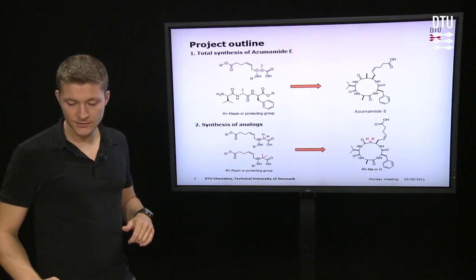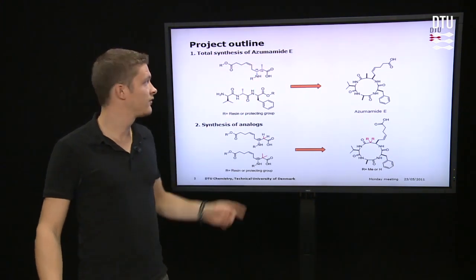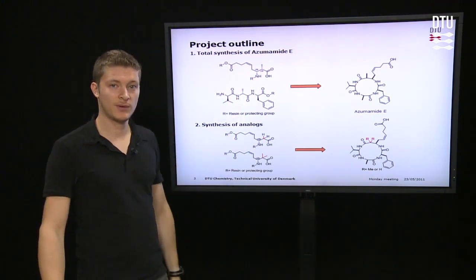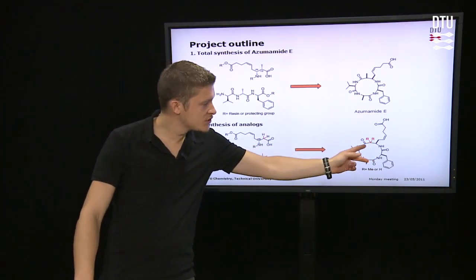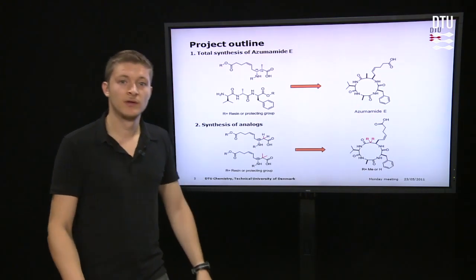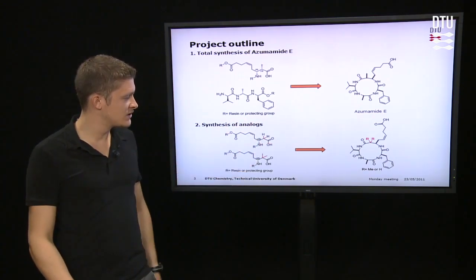The synthesis of these analogues revolves around these two building blocks: this beta amino acid and this tripeptide. I want to make analogues where we modify this position here in the beta amino acid. So I'm working on making these beta amino acid analogues.